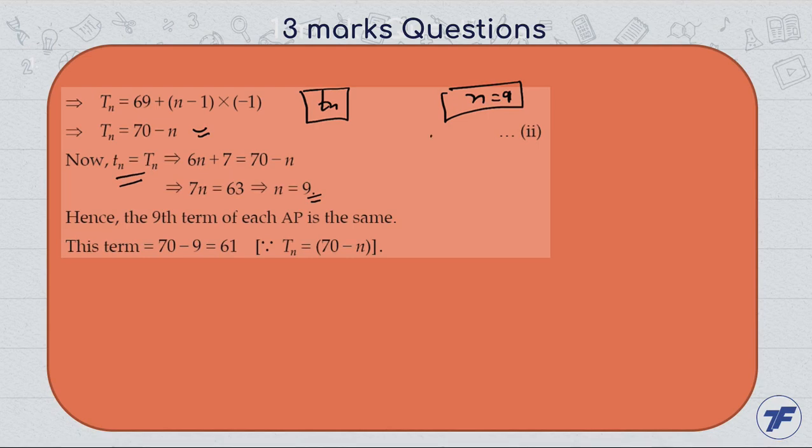We need to find out what is the 9th term. The first AP's 9th term and second AP's 9th term can be found and they are the same. We found that n equals 9, so the 9th term we get is 61. You can verify easily. I hope this question is clear to you.